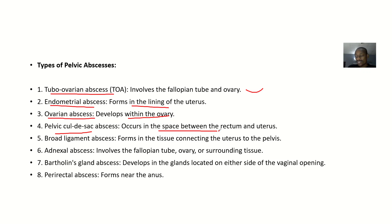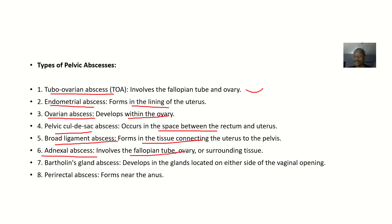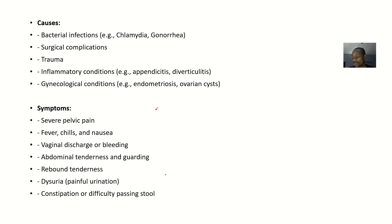The cul-de-sac is a dependent space between the rectum and the uterus, making it prone to accumulation of abscess. Then there is the broad ligament abscess, which forms in the tissue connecting the uterus and the pelvis. The adnexal abscess involves the fallopian tube, ovaries, or surrounding tissue. The Bartholin's gland abscess develops in the glands located on either side of the vaginal opening. The perirectal abscess forms near the anus.